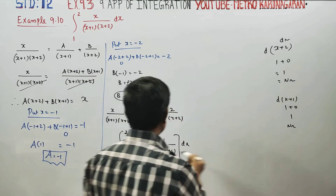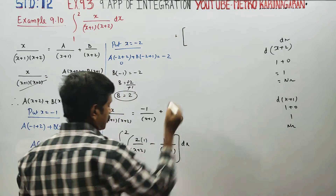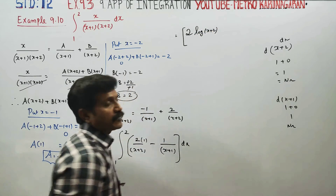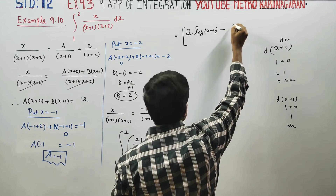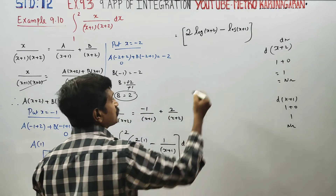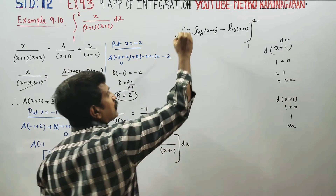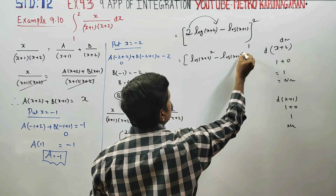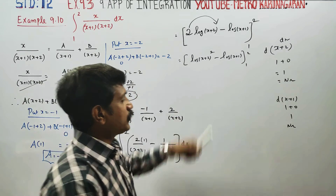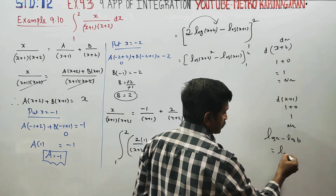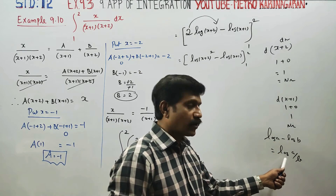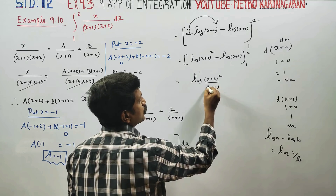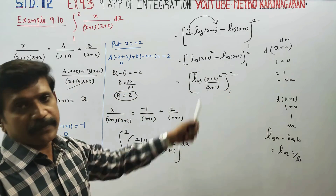Applying the integration formula, the first integral gives 2 times logarithm of (x plus 2), and the second gives logarithm of (x plus 1). By the power rule applied to the coefficient 2, this becomes logarithm of (x plus 2) squared minus logarithm of (x plus 1), with limits 1 to 2.